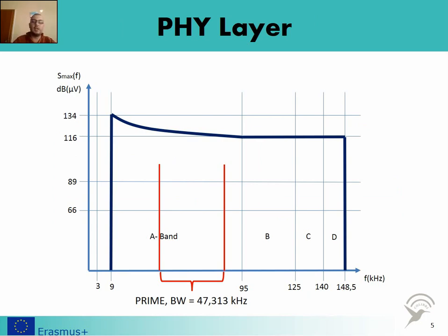Here you can see the bandwidth that has been allocated for PRIME. The bandwidth is 47.313 kilohertz, and it is allocated in a band between 42 and 89 kilohertz.